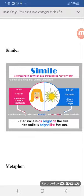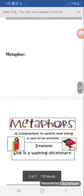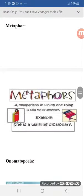like a moon. Another one is metaphor. In simile, students, we use 'as' and 'like,' but in metaphor we directly compare one thing to another without using those words. A metaphor is a comparison in which one thing is said to be another directly. For example, 'she's a walking dictionary.'